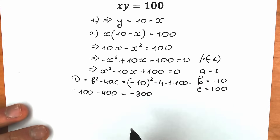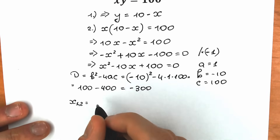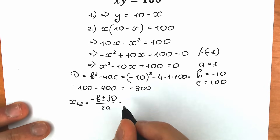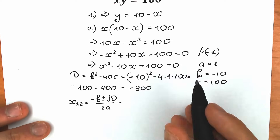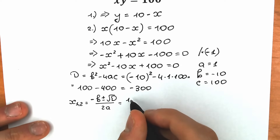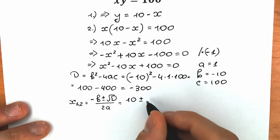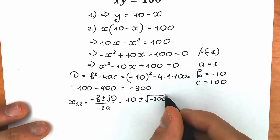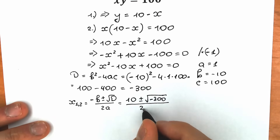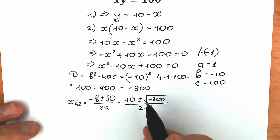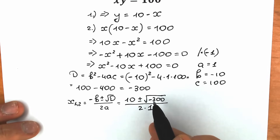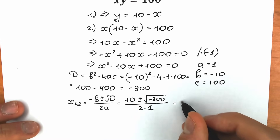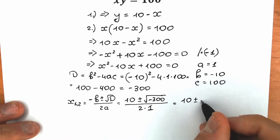Now let's apply the quadratic formula: x equals (minus b plus or minus square root of D) over 2a. Since b equals minus 10, minus b equals 10. So we have 10 plus or minus square root of minus 300, all over 2. We can express square root of minus 300 as square root of minus 1 times square root of 100 times square root of 3.